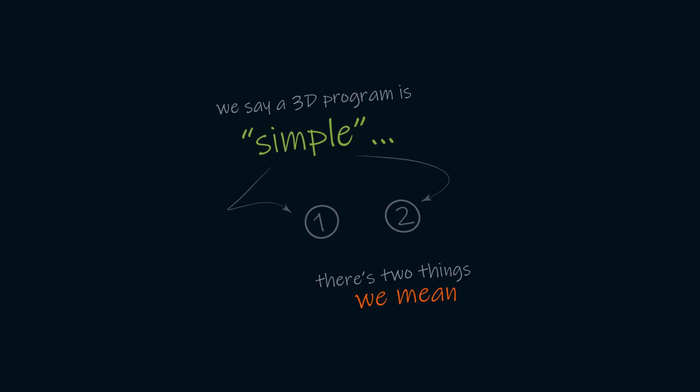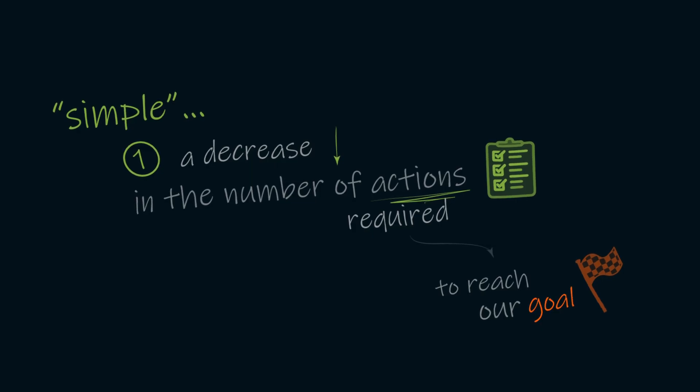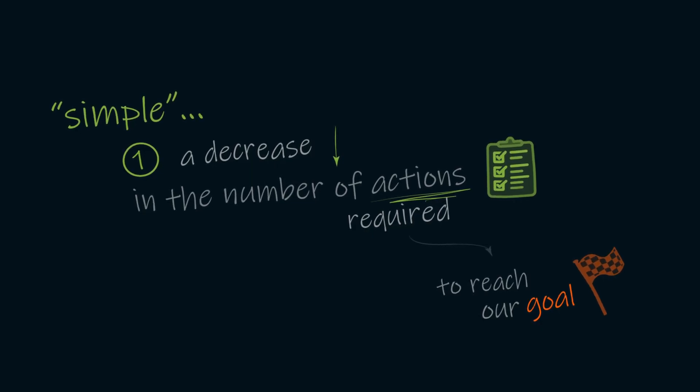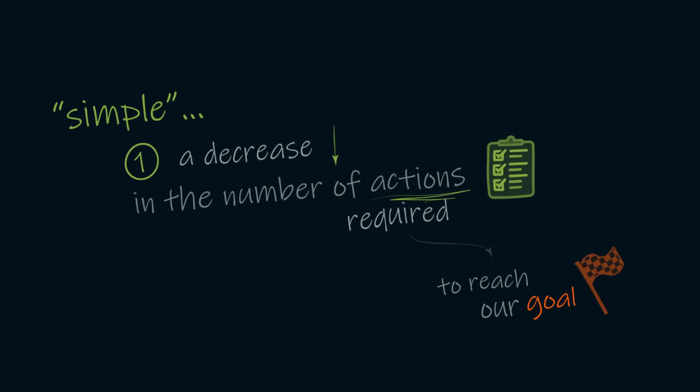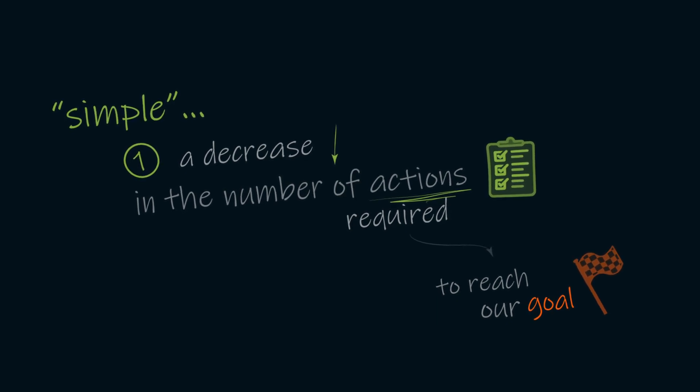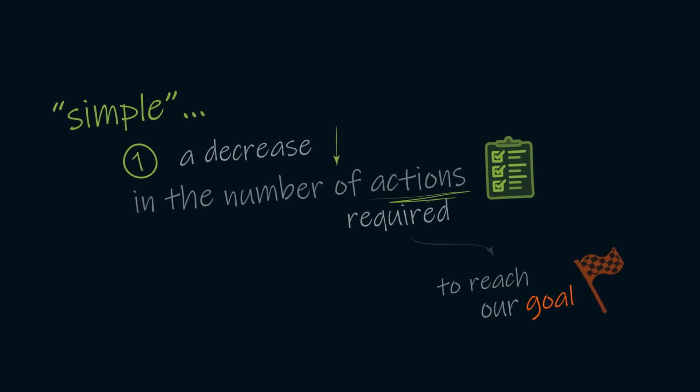When we think about a 3D program being simple, there's actually two things we mean when we say that. The first being simple, or the first concept of simplicity, we'll define as a decrease in the number of actions required by us to reach our goal. Or the decrease in the number of actions required for input to be made, and output to be executed.